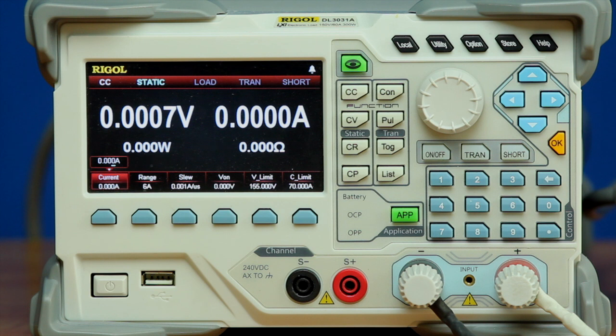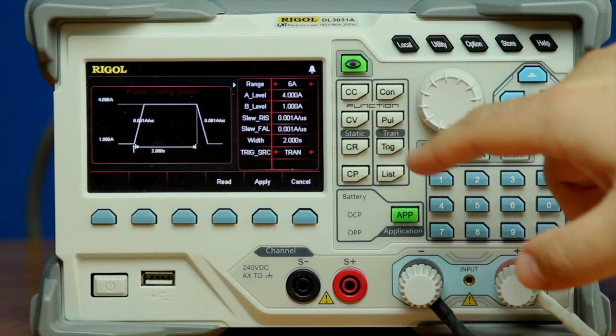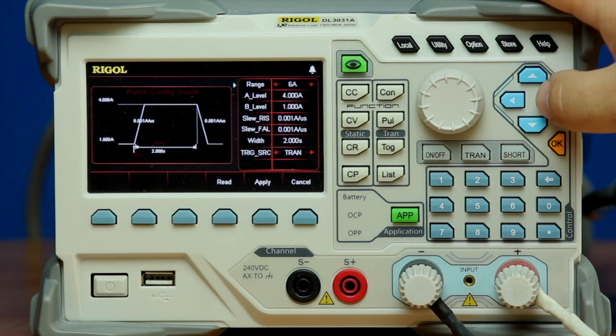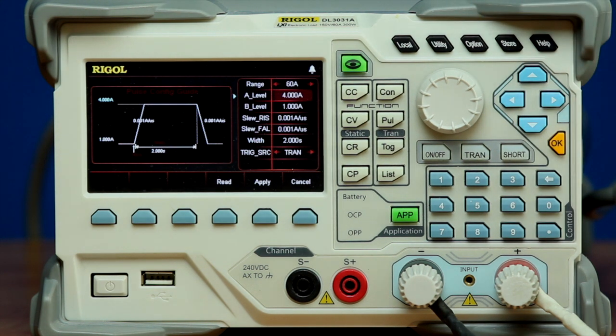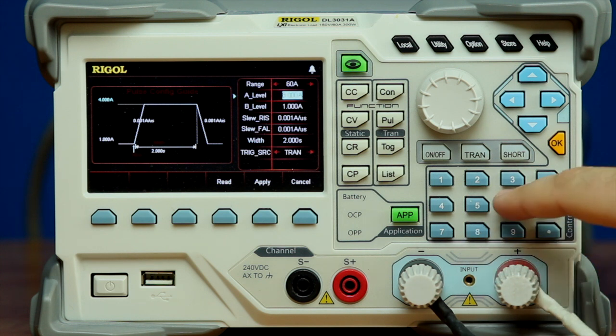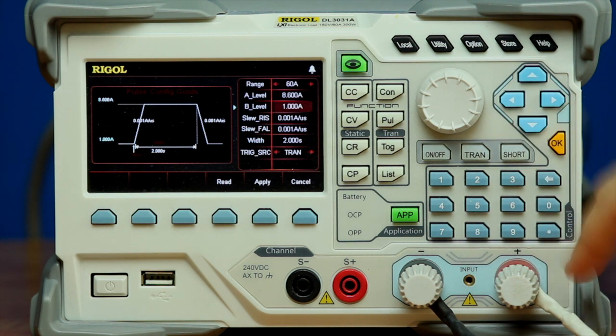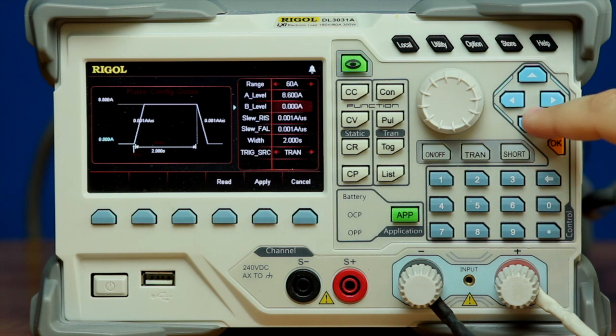In order to recreate the pulse we saw on our oscilloscope, we're going to use the pulse menu here in our electronic load, and then we're going to set up a couple different things. We're first going to change our range to 60 amps. We're going to set our A level, which is the top, to 8.6 amps. And then our bottom, we will set this down to zero.